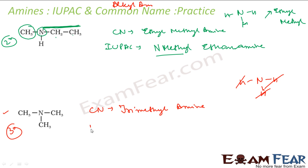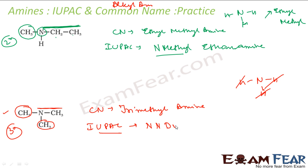Now let us talk about the IUPAC name. You have to take one branch as the longest chain; the others are two substituents attached to this nitrogen. Since there are two substituents attached to nitrogen, we will use N,N-dimethyl for this. Please note: for two identical substituents I use N,N-dimethyl. Had there been an ethyl group here, I would have used N-methyl and N-ethyl. But since they are two methyls attached to this nitrogen, I am using N,N-dimethyl.